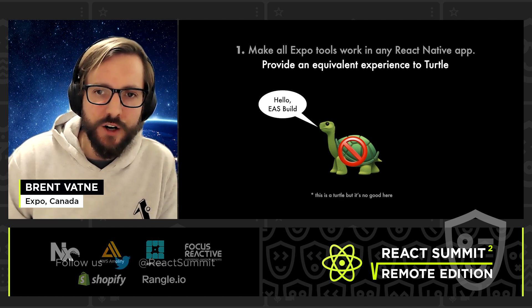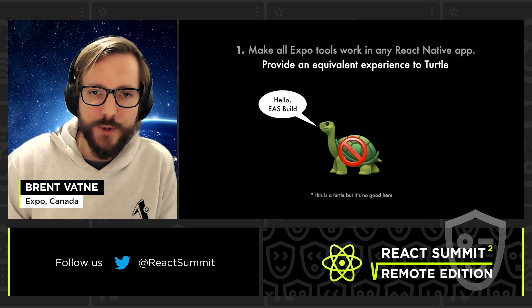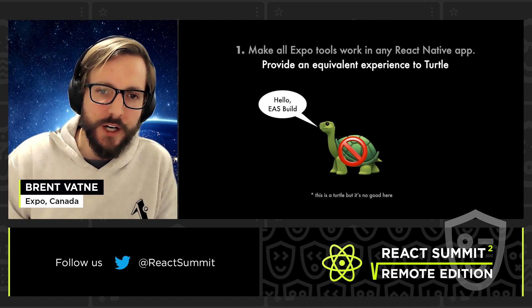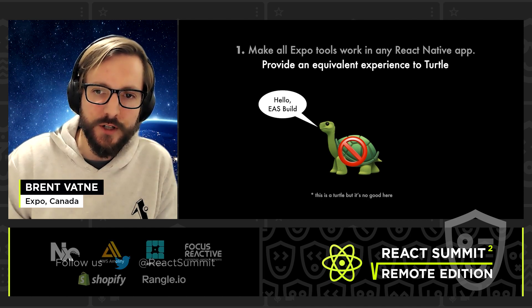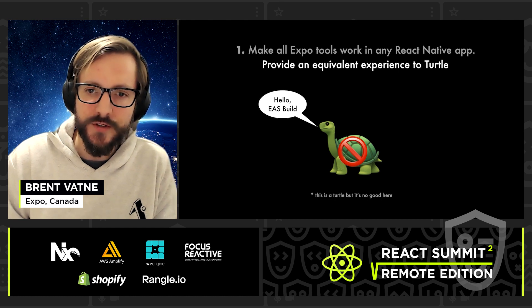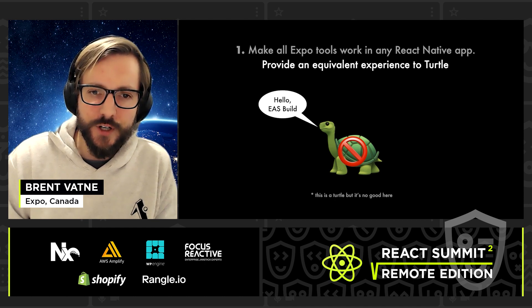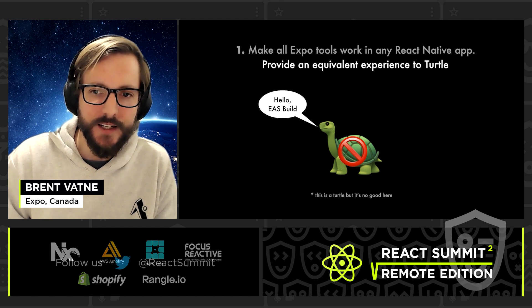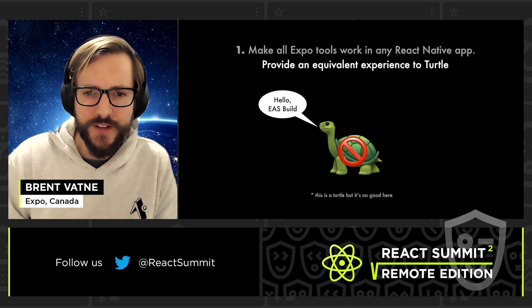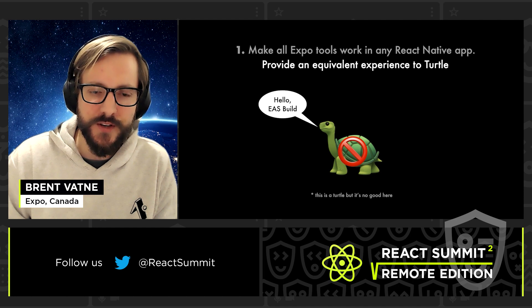Turtle can't support any arbitrary React Native app because it's purpose-built to assemble shell apps, which is very different from compiling an app. So we built a new service from scratch called EAS Build. EAS stands for Expo Application Services. Running an Android or iOS build on a cloud server isn't exactly a novel idea, but we need to build it to provide a seamless and tailored experience deeply integrated with Expo Services and React Native.